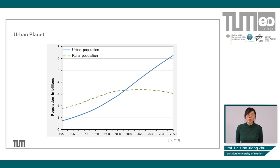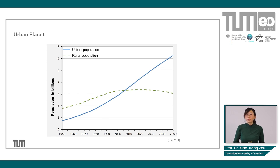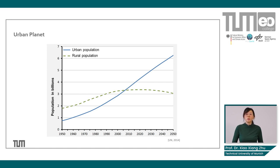What you can see is that in 2008 there was a historic change: for the first time, more people were living in urban areas than rural areas. As this trend evolves, it will become even more dominant, and we will see the future population literally all living in cities.